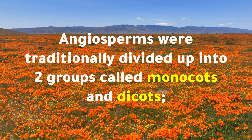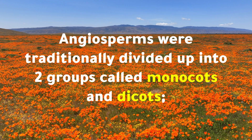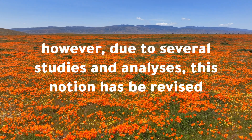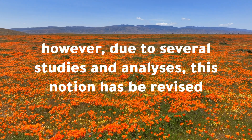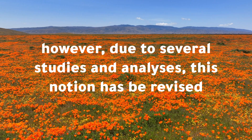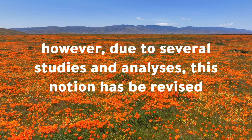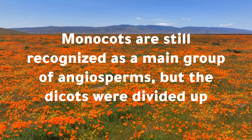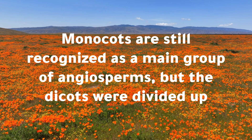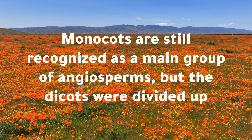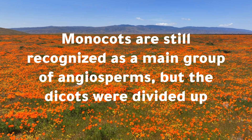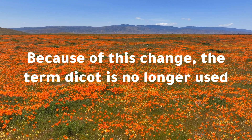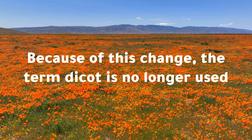Angiosperms were traditionally divided up into two groups, called monocots and dicots. However, due to several studies and analyses, this notion has been revised. Monocots are still recognized as a main group of angiosperms, but the dicots were divided up. Because of this change, the term dicot is no longer used.